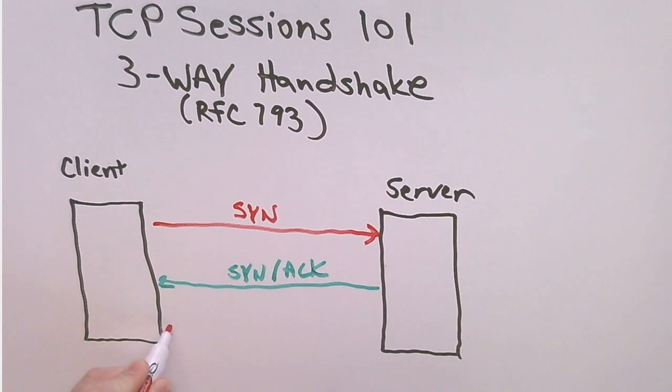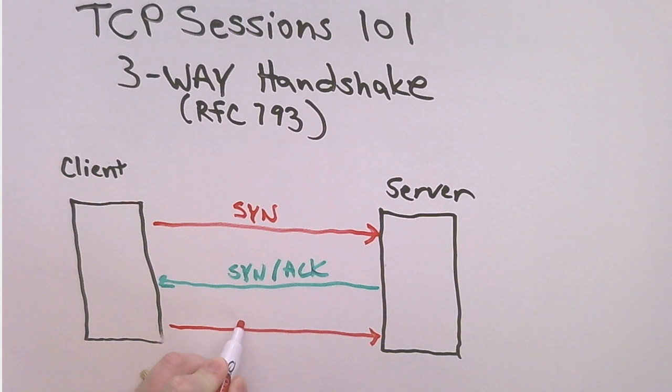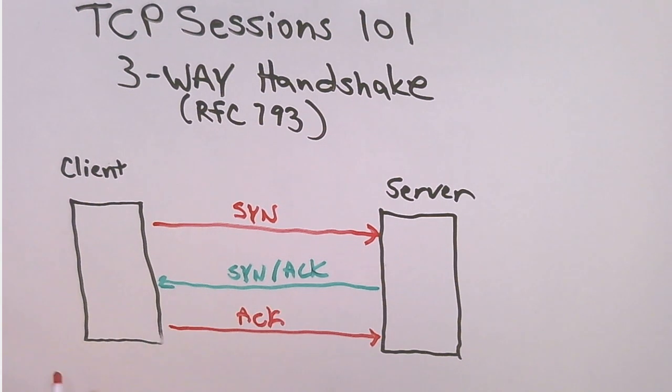Once the client receives that, it sends the last and third stage, which is another acknowledgement from the client saying, I understand the sequence that you want to use and sends it to the server. And then the TCP session has been created.